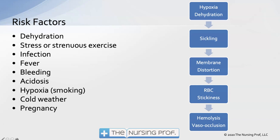On the right-hand side, there's a chart showing the process occurring in sickle cell crisis: hypoxemia and dehydration cause sickling, then there's distortion of the red blood cell membrane and the vasculature. The red blood cell becomes more sticky than normal, leading to hemolysis — breaking those red blood cells down — as well as vaso-occlusion of sickled cells stuck in small capillaries, causing pain.